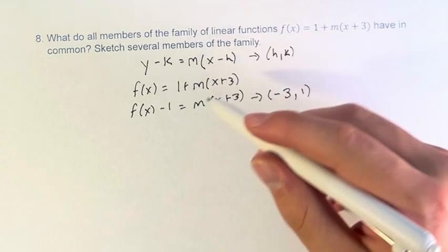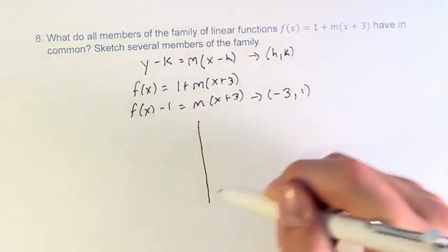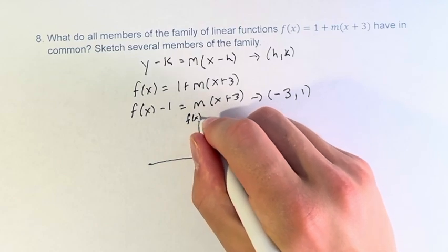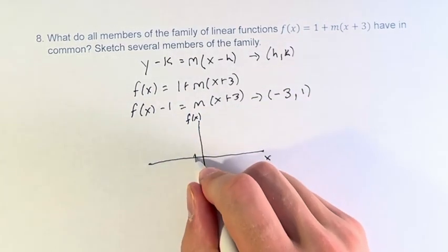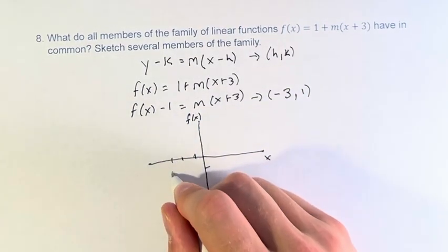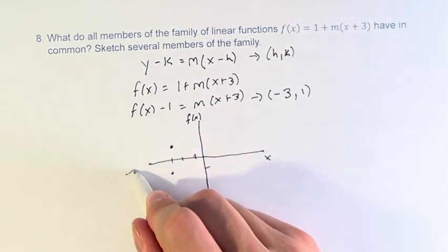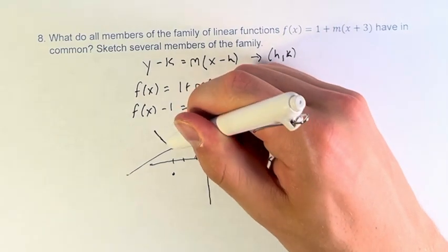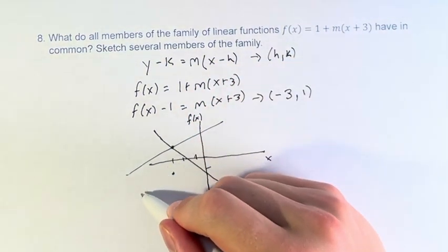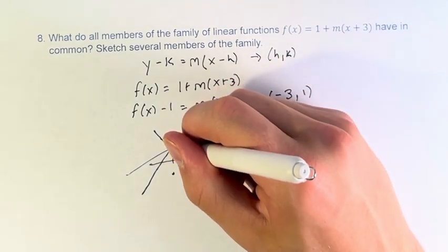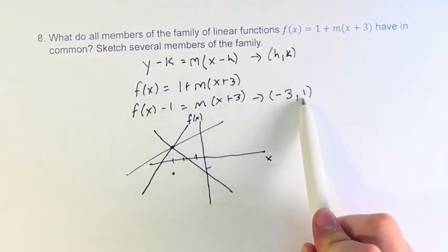What does this look like if we're going to sketch this? Well, in the xy-plane, if we are graphing f(x) over x, and we have the point (-3, 1) up here, not down here, there is a bunch of lines with different slopes. The only common thing they have is that they go through a singular point, (-3, 1).